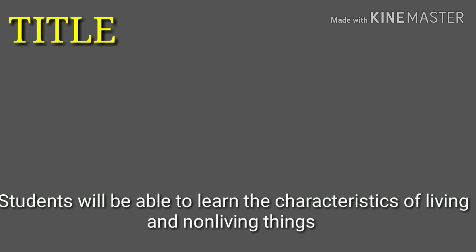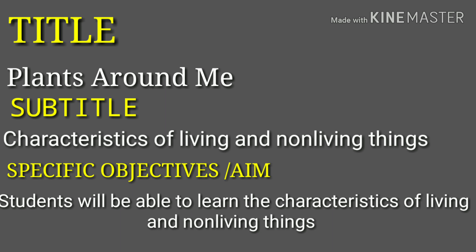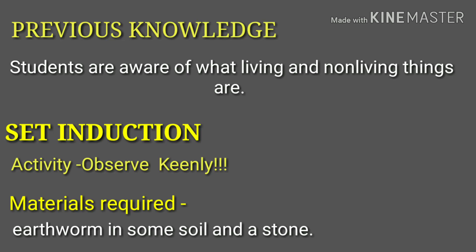To begin with, you have to first write down the title, that is 'Plants Around Me,' then comes the subtitle, that is 'Characteristics of Living and Non-Living Things,' then specific objectives or aim: students will be able to learn the characteristics of living and non-living things. Then previous knowledge: students are aware of what living and non-living things are.